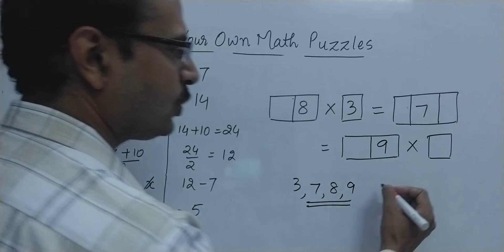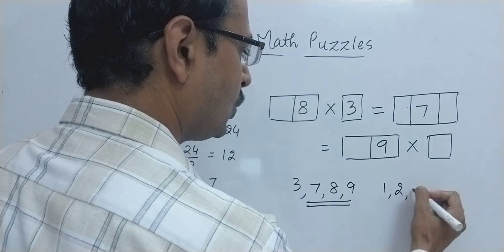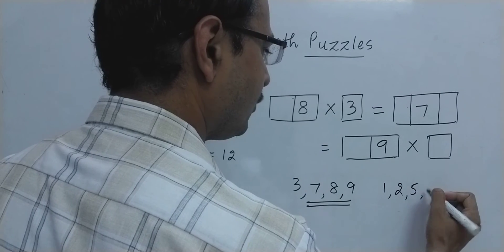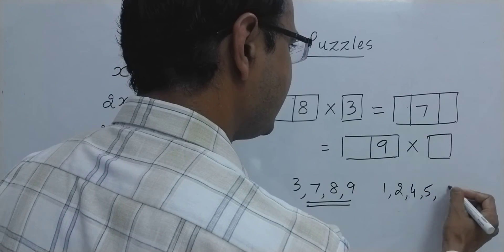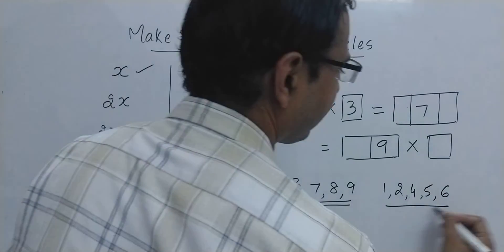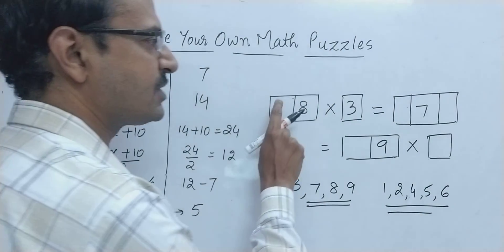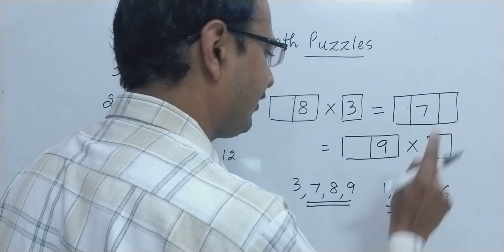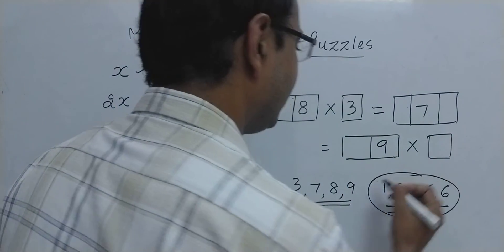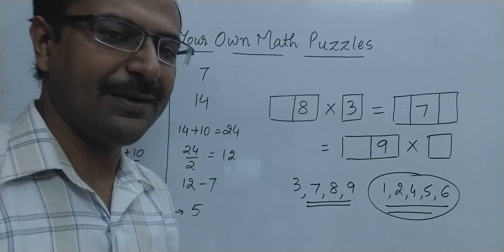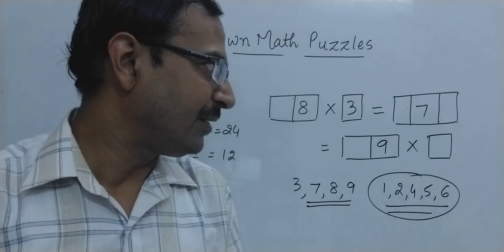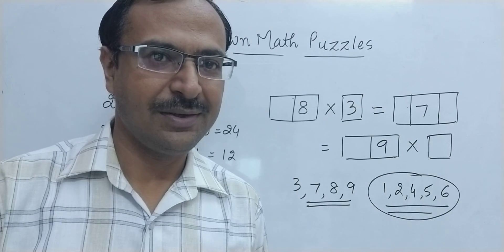So you need to use 1, 2, 4, 5, and 6 in place of the 5 blank columns. So try to fill one number out of these in each of the columns and try to make the equation exactly true.